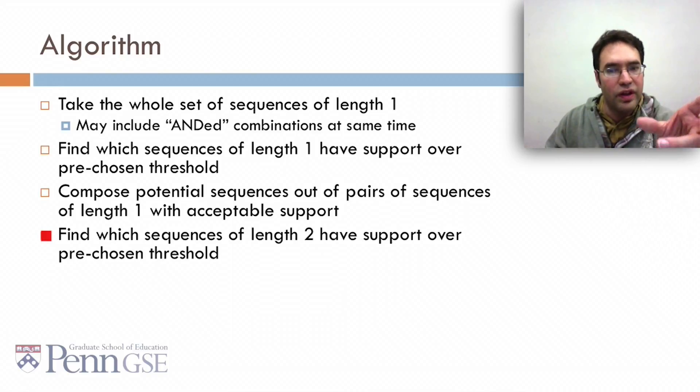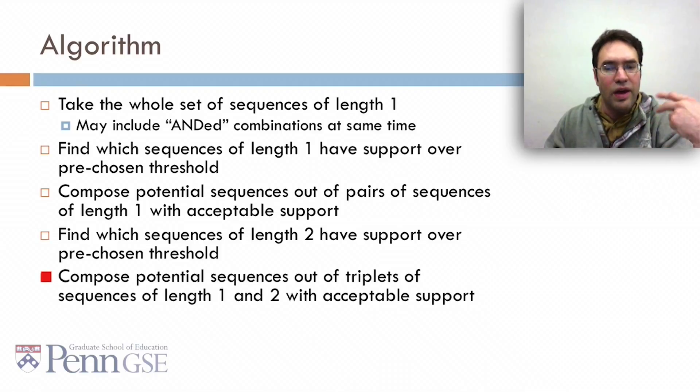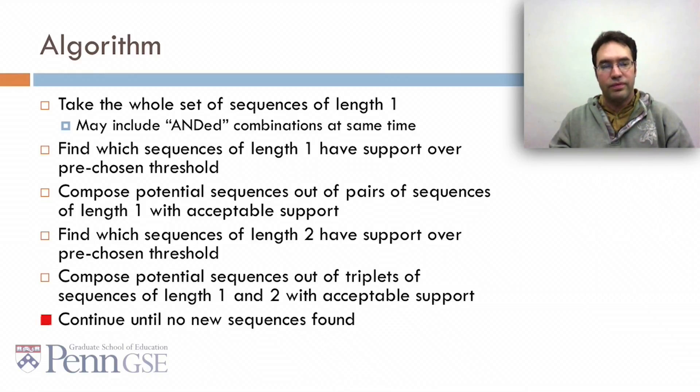Then we find which sequences of length two have support over our pre-chosen threshold. Then we compose potential sequences of triplets out of sequences of length one and two with acceptable support, and so on. We continue until we don't have any new sequences supported above the threshold.